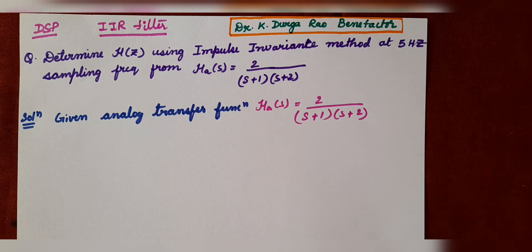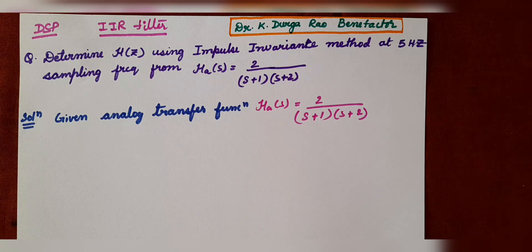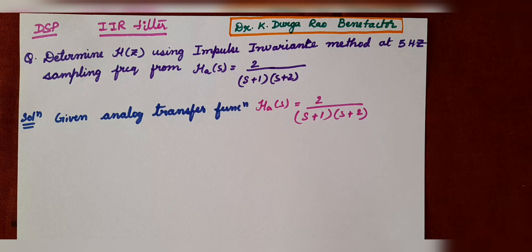There are two methods for designing IIR filters: one is the impulse invariance method and the other is bilinear transformation. Coming to today's class, the topic is the impulse invariance method. The transformation of an analog filter to a digital filter without modifying the impulse response of the filter is called impulse invariant transformation. In this transformation, the impulse response of the digital filter will be the sampled version of the impulse response of the analog filter.